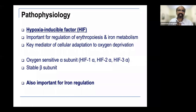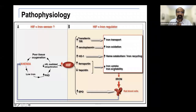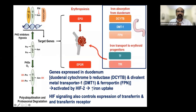HIF (hypoxia-inducible factor) is key for regulation of erythropoietin and iron metabolism — it is the key mediator for cellular adaptation to oxygen deprivation. It has an oxygen-sensitive alpha subunit (HIF-1α, HIF-2α, HIF-3α) and a stable beta subunit. Hypoxia-induced increase in HIF causes upregulation of multiple factors, including ferroportin and hepcidin — so HIF is also an iron regulator, which was relatively unknown until a few years ago. HIF-2 activates genes in the duodenum that increase iron uptake and controls expression of transferrin and transferrin receptor.